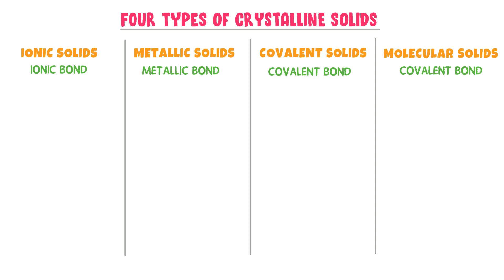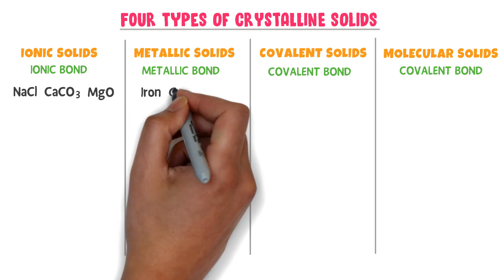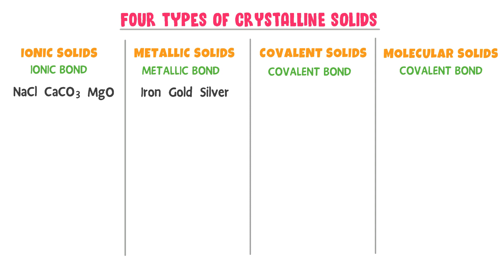I will write the properties of each bond respectively. Ionic solids — examples: sodium chloride, calcium carbonate, magnesium oxide. Metallic solids — examples: iron, gold, and silver. Covalent solids — examples: diamond, graphite, and silicon dioxide. Molecular solids — examples: ice, sugar, and carbon dioxide.